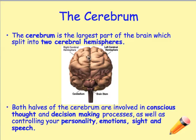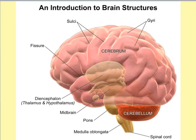Here we're looking at the back of the brain. You can see here's the cerebrum, the cerebellum is down here, and then the medulla is in here. The cerebrum is involved in conscious thought and decision-making processes. The cerebellum is involved in balance, and the medulla is involved in maintaining your heart rate and respiratory rate.